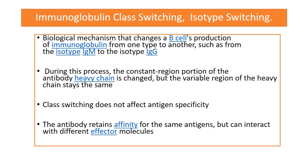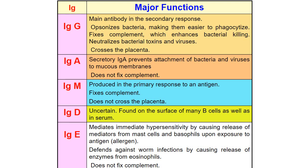This slide describes class switching, or the changing of one isotype of immunoglobulin to another. This is a biological mechanism that changes a B cell's production from one type of immunoglobulin to another — for example, an antigen produces IgM in the primary response, and in the secondary response it switches to IgG. During this process, the constant region of the antibody is changed but the variable portion remains the same, so there is no effect on antigen specificity. The antibody retains affinity for the same antigen but can interact with different effector molecules. A final slide summarizes the major functions of all immunoglobulins.